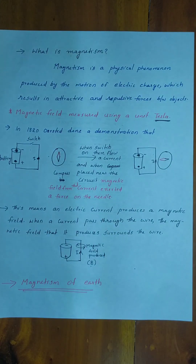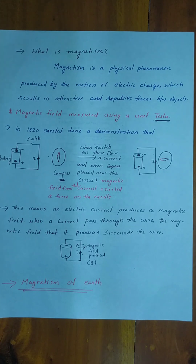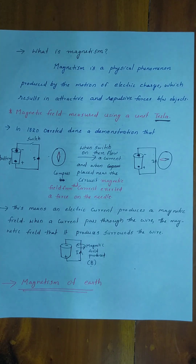Now let's talk about earth's magnetism, also called geomagnetism or terrestrial magnetism. Sir William Gilbert proposed that there is a huge imaginary bar magnet inside the earth, but this suggestion was rejected.